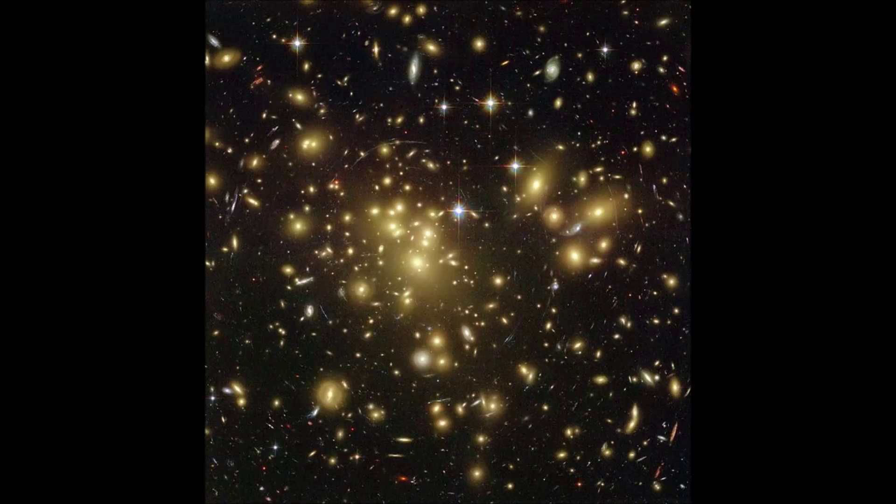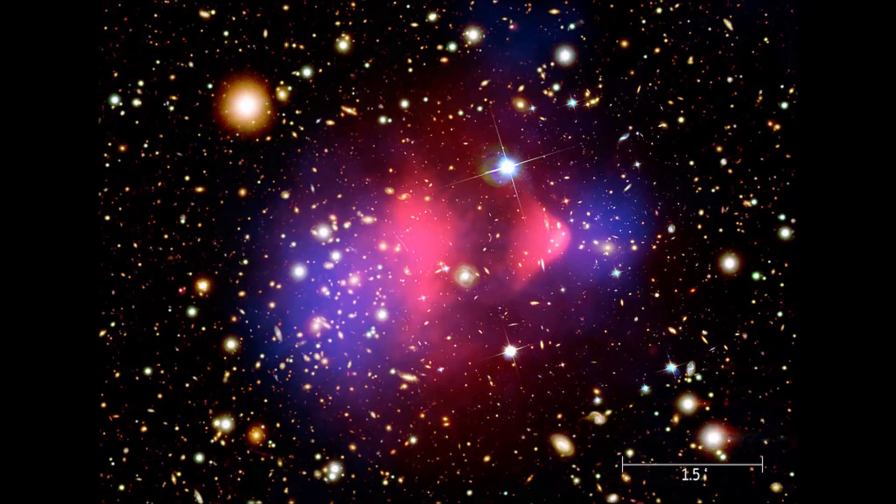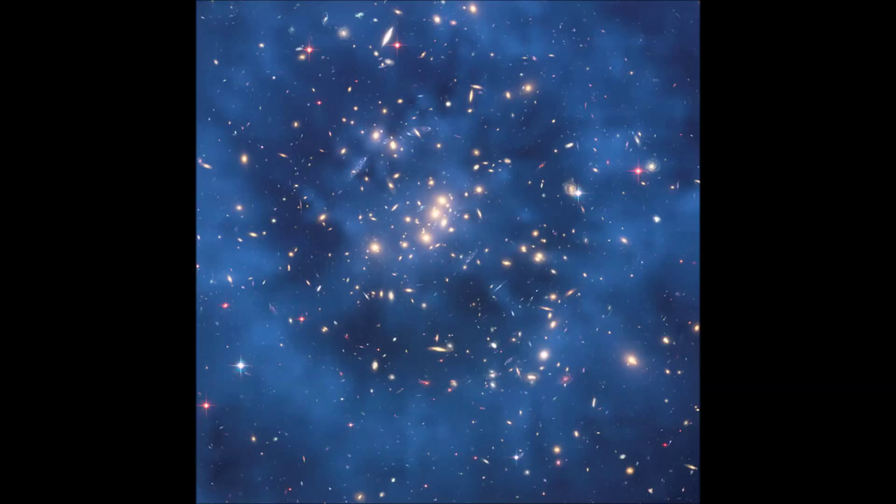Dark matter is a kind of matter hypothesized in astronomy and cosmology to account for gravitational effects that appear to be the result of invisible mass. There are numbers of observations as proof of the existence of dark matter.